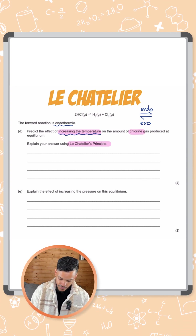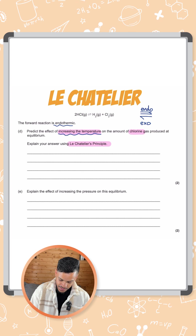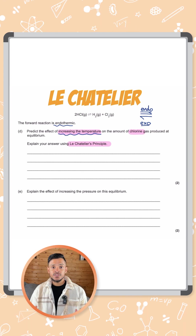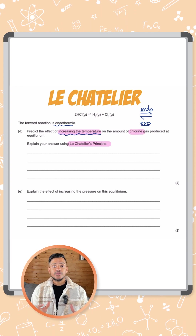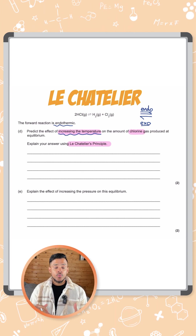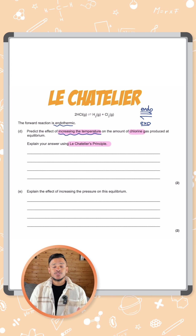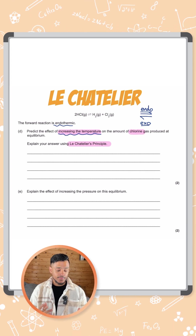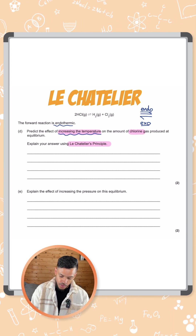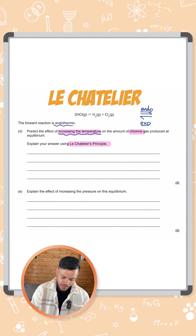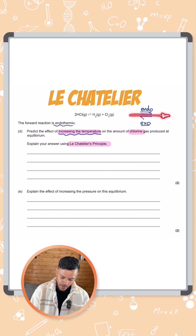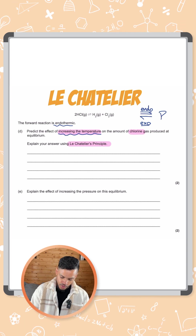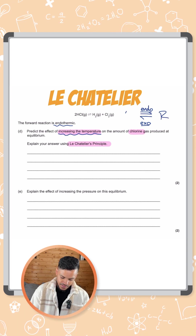Out of endothermic and exothermic reactions, endothermic reactions reduce the temperature whereas an exothermic reaction increases the temperature. So the equilibrium would favour the right-hand side of the reaction, not the left-hand side.